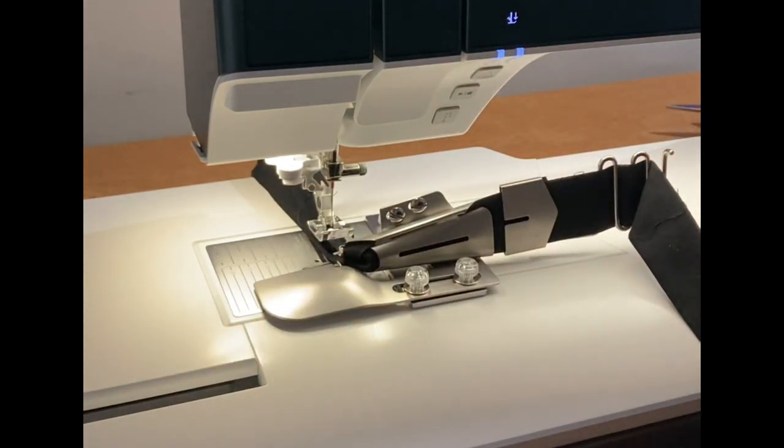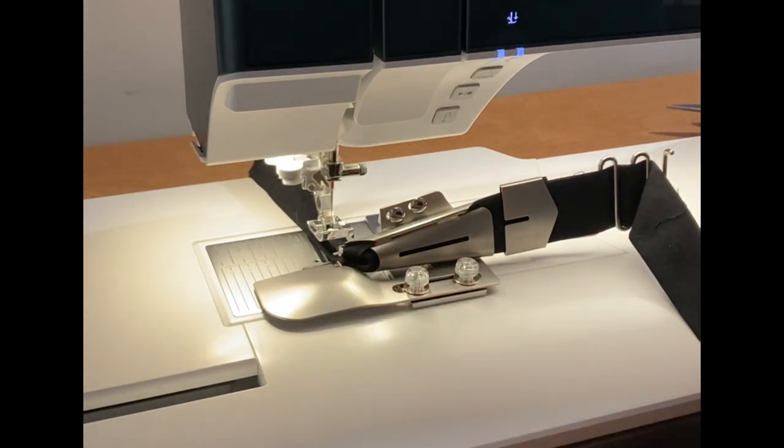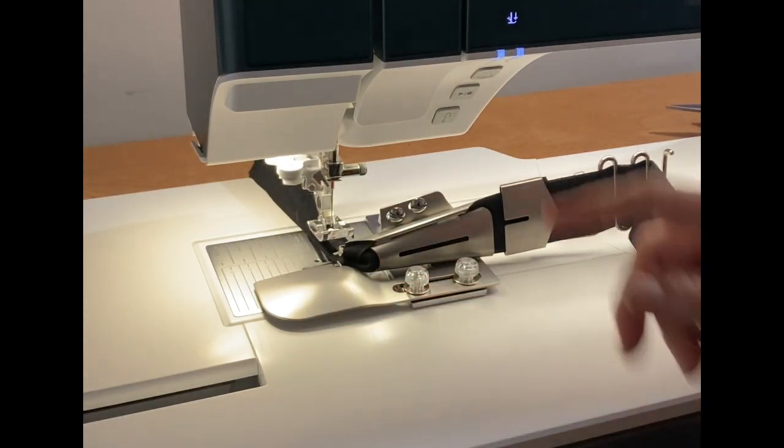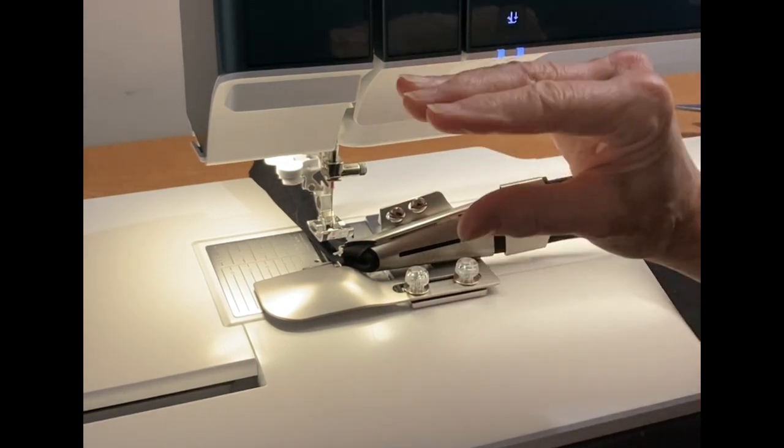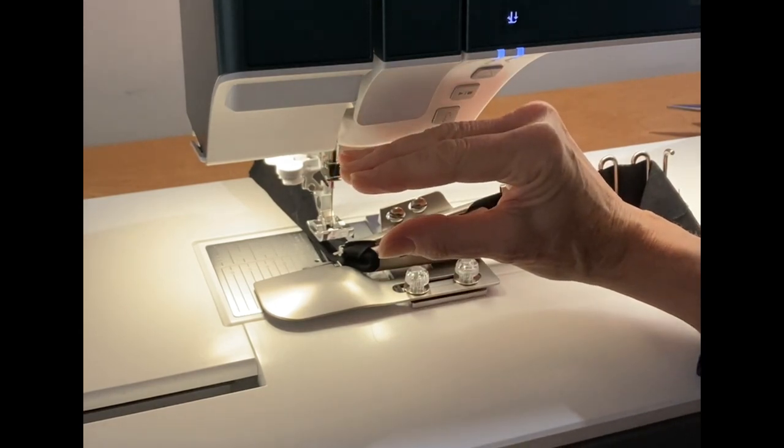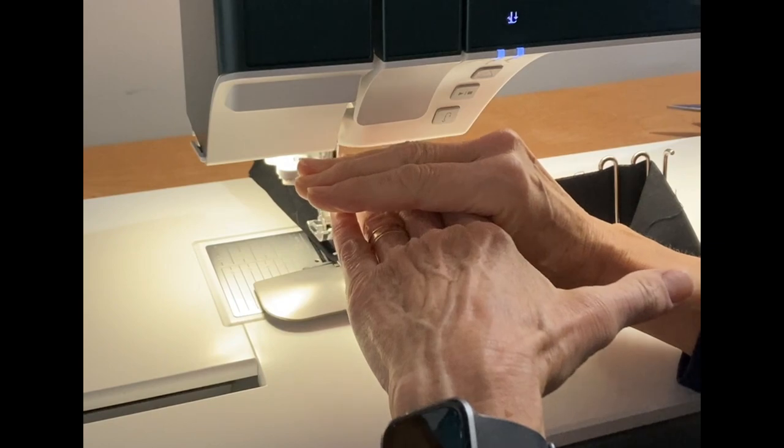When we go to sew the binding on, we are going to place the quilt sandwich in between these two layers of fabric. The shape is that sideways taco shape, and the quilt sandwich becomes like the beans in the taco, fitting right in there.